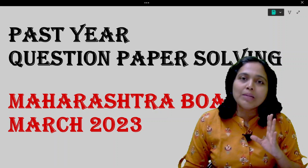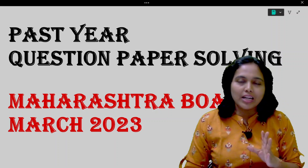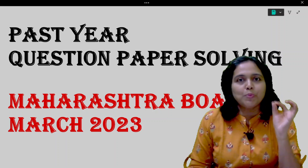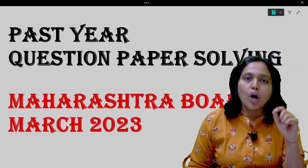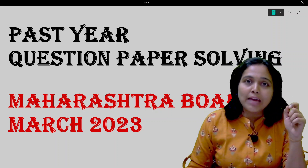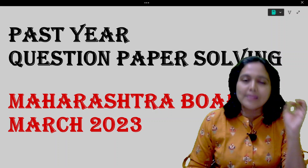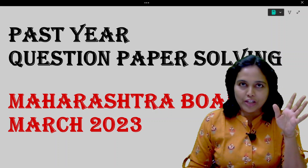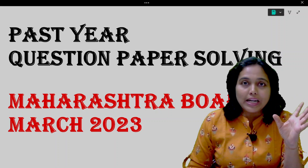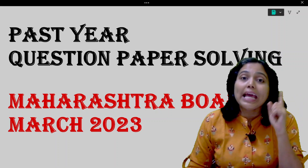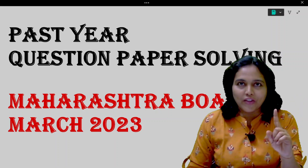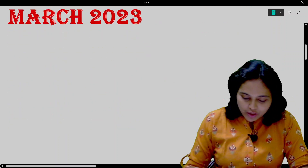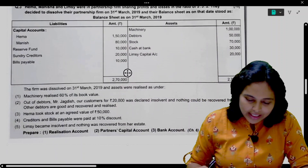In this lecture, we are going to discuss question number 3. Both questions we are going to discuss — you have an option in this question paper: option A, Dissolution of Partner, and option B, Bills of Exchange. You have to attempt both questions but solve any one. So now, let us begin with today's question number 3.